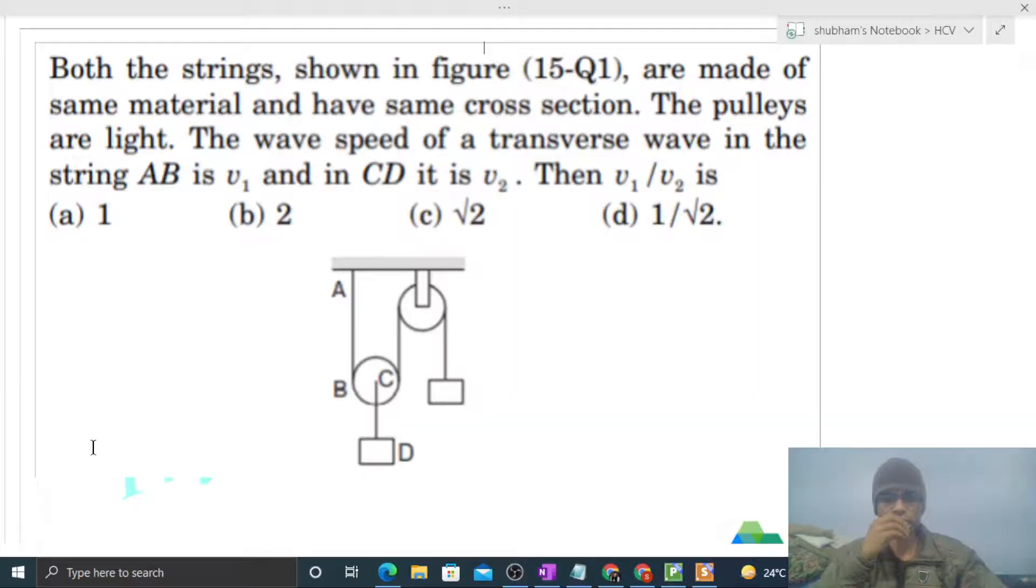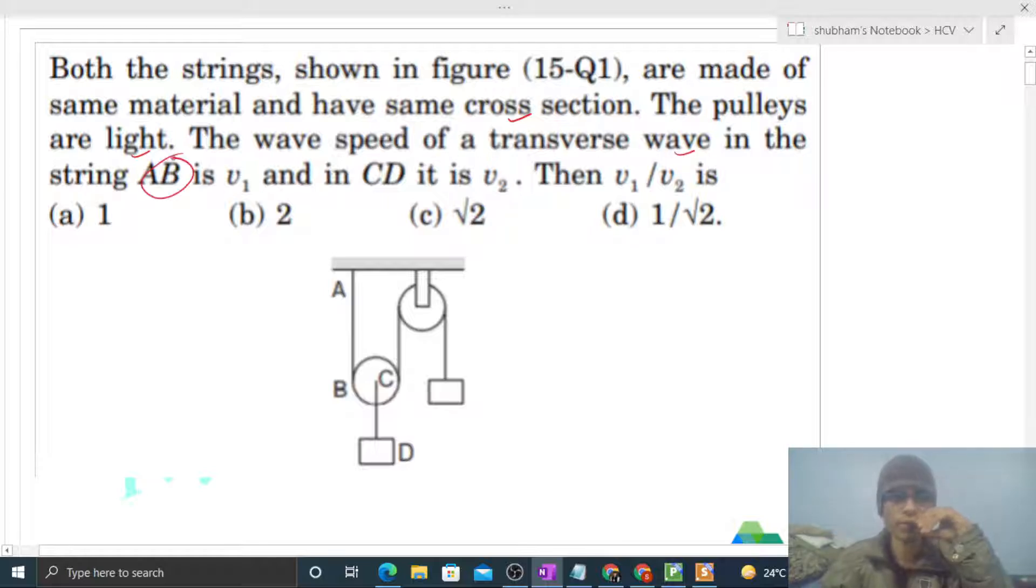Okay, hi everyone. Today let's discuss one interesting problem. It says both the strings shown in figure are made of same material and have the same cross-section. The pulleys are light. The wave speed of a transverse wave in string AB is v1 and in CD is v2. Then v1 by v2 is?